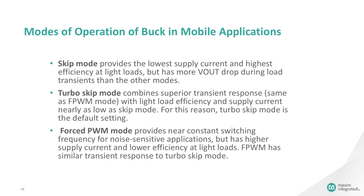Maxim buck regulators used in mobile applications operate in three modes: skip mode, turbo skip mode, and forced PWM mode. Skip mode provides the lowest supply current and highest efficiency at light loads. Turbo skip mode combines superior transient response — the same as the forced PWM mode — with light load efficiency. Forced PWM mode provides near-constant switching frequency for noise-sensitive applications.